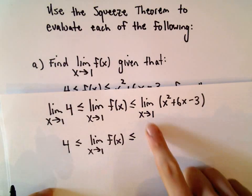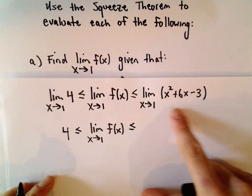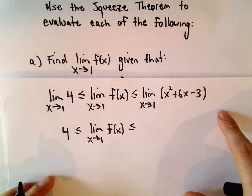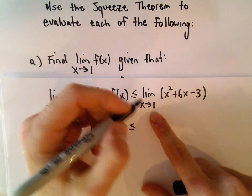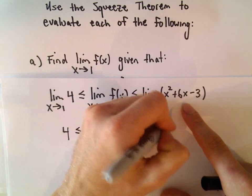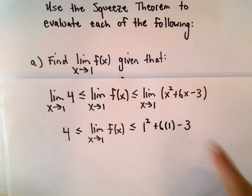To evaluate this limit, x squared plus 6x minus 3, that's a nice little parabola. It's continuous everywhere. So all we have to do is simply plug in our value. If we plug in 1, we would get 1 squared plus 6 times 1 minus 3.